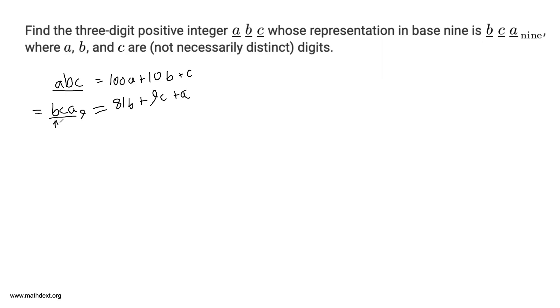This B is multiplied by 9 squared. This C is multiplied by 9. And this A is multiplied by 1 or 9 to the 0. So you really have 100A plus 10B plus C is equal to 81B plus 9C plus A.